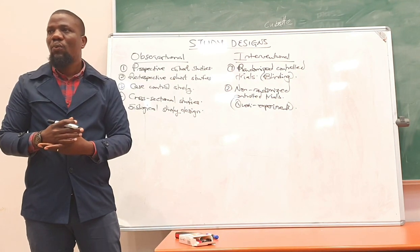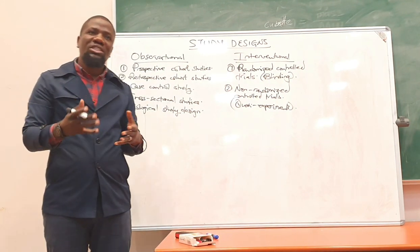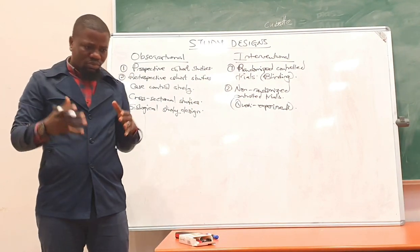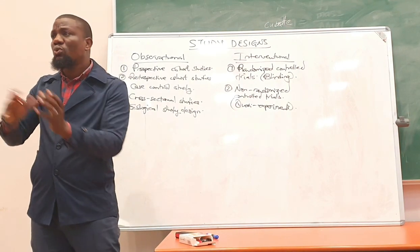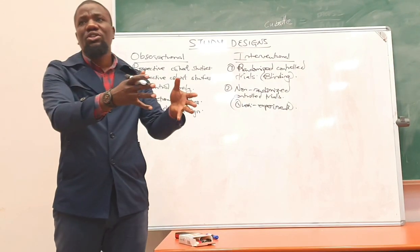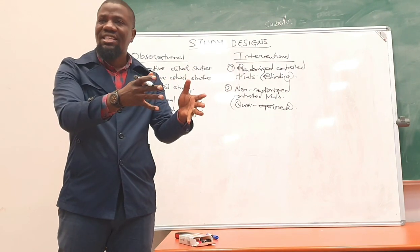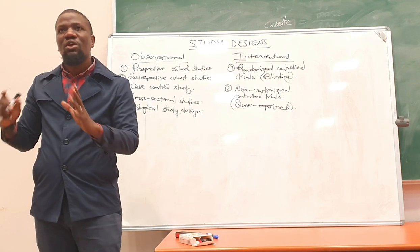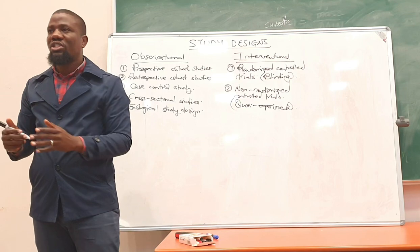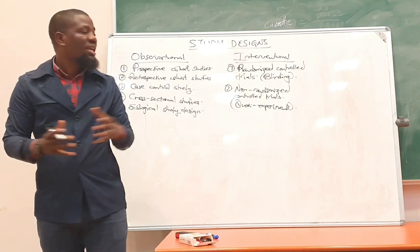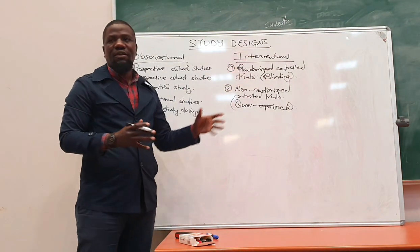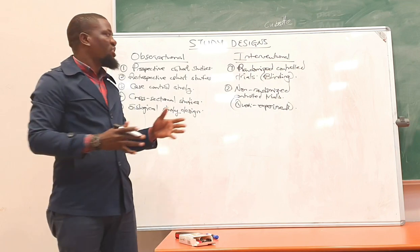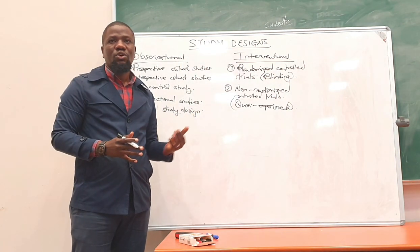For example, in a school setting, I want to determine whether giving students a certain kind of education would improve their performance. You randomize students to that package of education, and other students you randomize to not having that education, then measure the outcomes. That is a clinical trial — no drug involved, just education as the intervention.